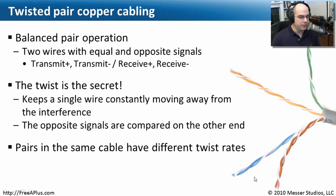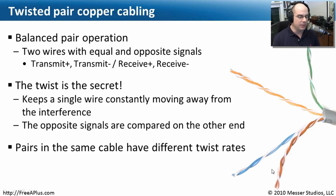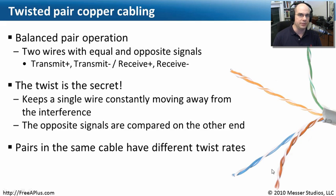Another thing you'll notice — you can almost tell this by the picture here — this blue cable has a very slow twist in it, and the cable right next to it has a much faster twist. There are different twist rates between those different cables. That also helps, because you're going to see different communications and different interference depending on how fast the twist is, and that's going to help get the signal in one piece to the other side.